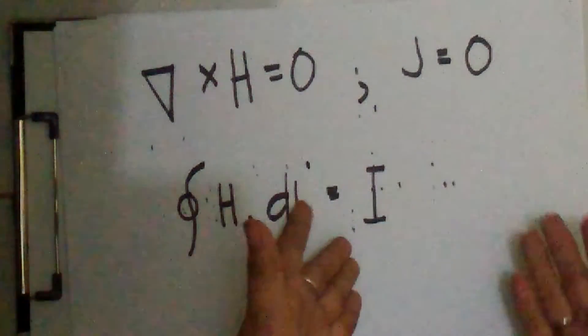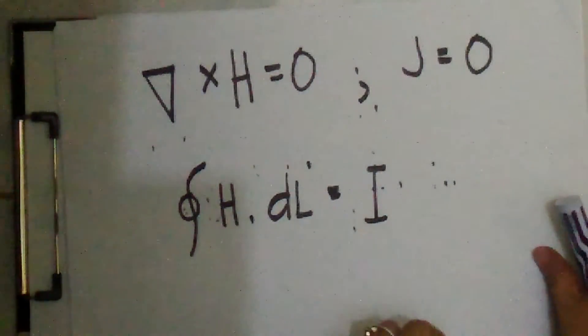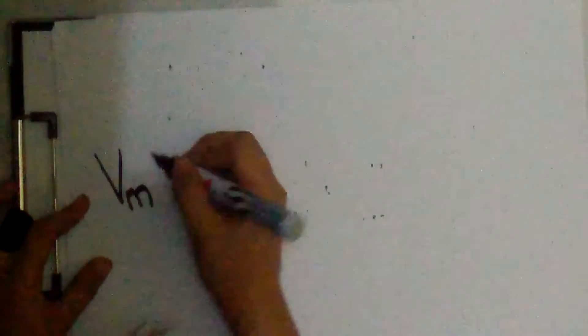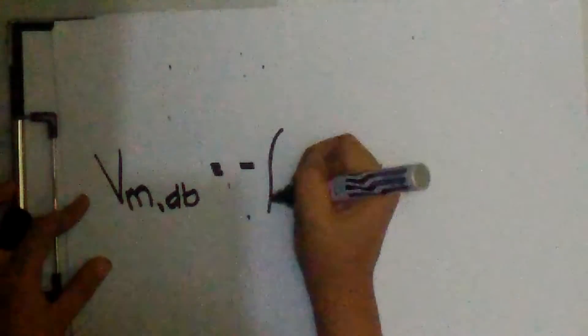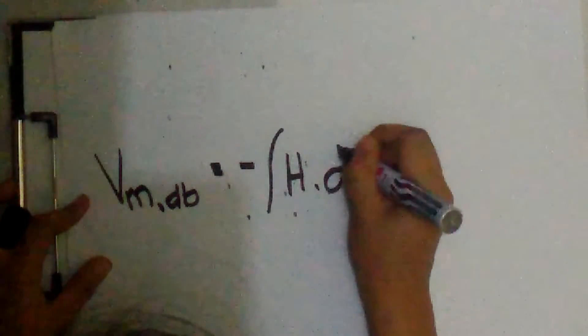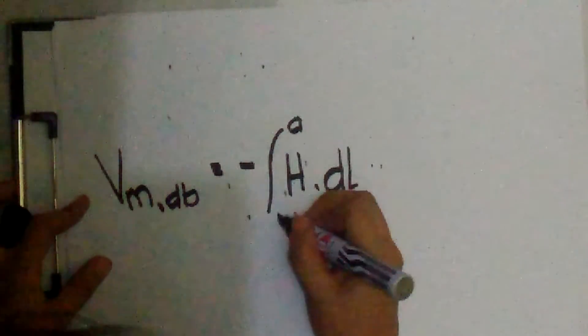If no current I is enclosed by the path, then a single valued potential function may be defined. In general, Vm AB is equal to the negative integral of H dot dL limit A and B.